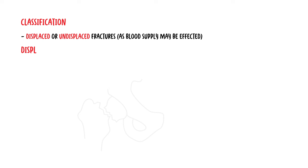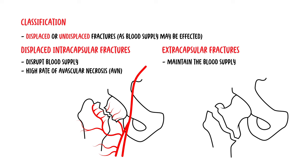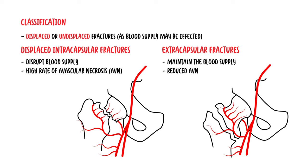Displaced intracapsular fractures disrupt the blood supply and have a high rate of avascular necrosis, which is essentially bone death of the femoral head, as well as nonunion, when the bones don't join together. On the other hand, extracapsular fractures maintain the blood supply to the head, thus reducing the risk of avascular necrosis, and these fractures normally heal well.